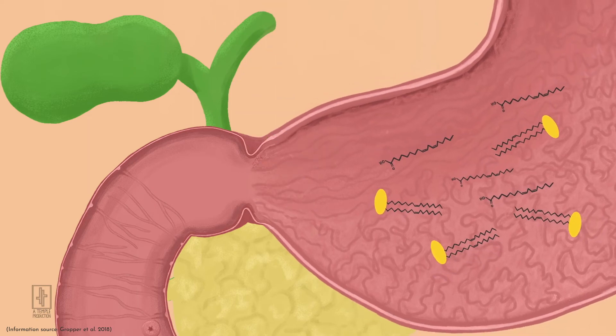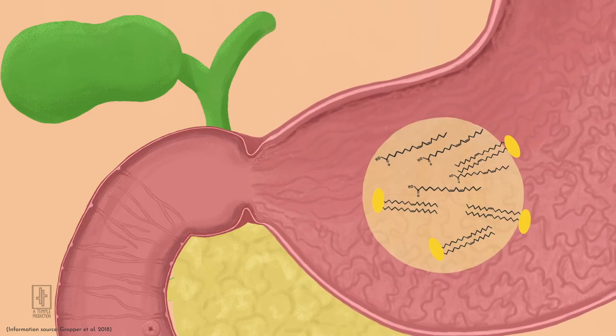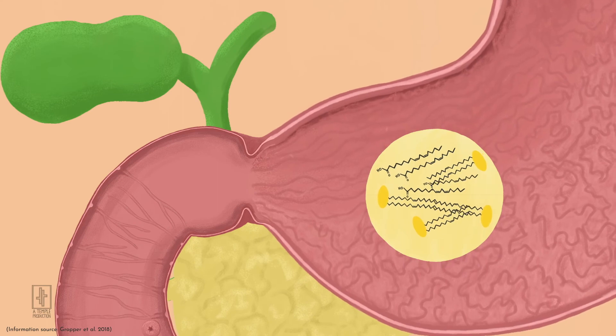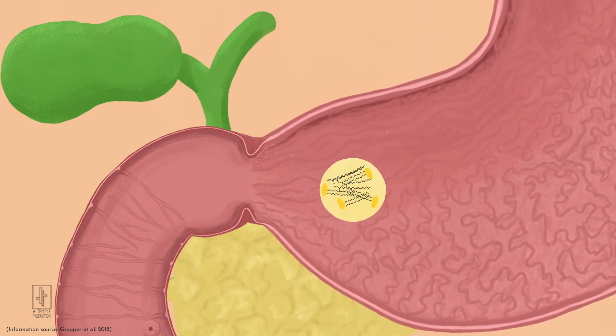The muscular contractions of the stomach emulsify the fats into small fat droplets. As the fat moves into the small intestine,